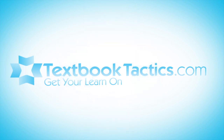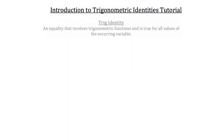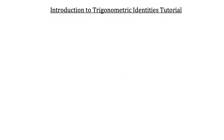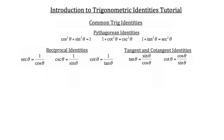This is the introduction to trigonometric identities tutorial. A trigonometric identity is an equality that involves trigonometric functions and is true for all values of the occurring variable. Trig identities are one of those things in math where it's just easiest to show you the work and explain it that way. So the first thing you want to start with is the common trigonometric identities.